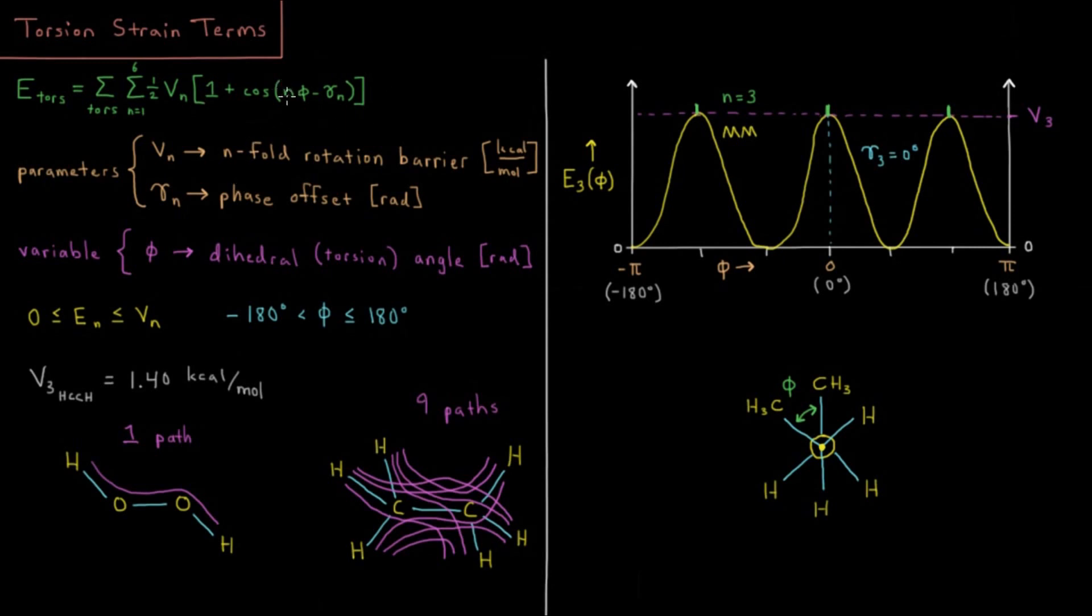We have N, which is the N fold level of whatever torsion we're talking about. So particularly in ethane, we're familiar that there's a kind of three fold rotation barrier as these hydrogens go either eclipse or staggered. So for ethane, we'd only have a three fold term here would look like this versus our torsion angle from negative 180 degrees to positive 180 degrees.